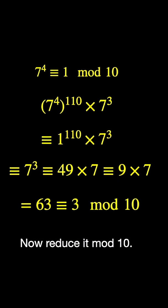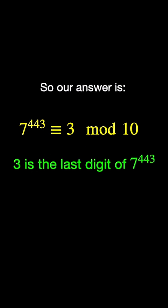Of course, 9 times 7 is 63, and its last digit is 3, so it's congruent to 3 mod 10. So the last digit of 7 raised to the 443 must be 3. And that's our answer. Thanks for watching.